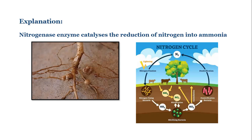Leguminous plants are plants belonging to the pulses family. You associate pea, beans, and other pulses with leguminous plants.